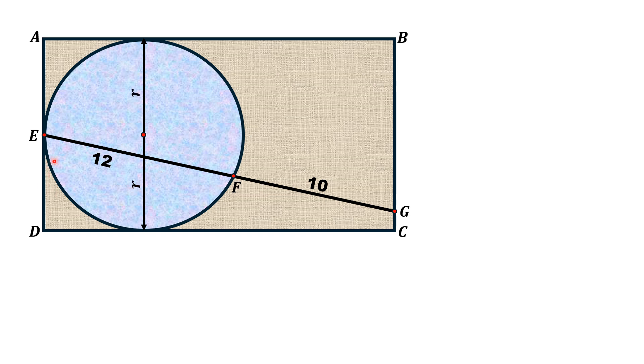We draw a line segment from point E which meets side BC of the rectangle and is perpendicular to this side. This line EP is perpendicular to side BC. Also, we mark this point as H and draw a line segment from H to F.